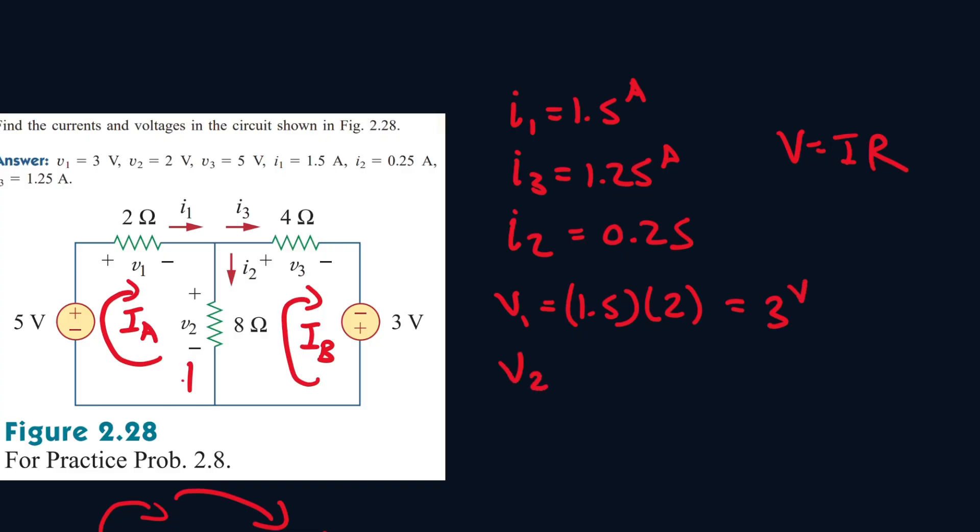V2 will be 0.25 amps times 8 ohms, which gives us 2 volts. And V3 will be 1.25 amps times 4 ohms, which gives us 5 volts.